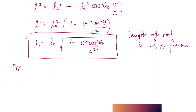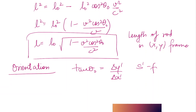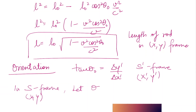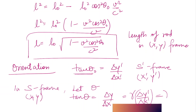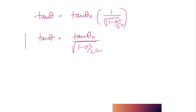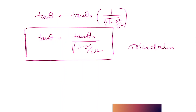Now we find the orientation. We know that tanθ₀ = Δy'/Δx' in the S' frame. In the S frame (xy), let the angle be θ. Then tanθ = Δy/Δx. Using the transformation equations, Δy = Δy' and Δx = Δx'/γ, so tanθ = γ·tanθ₀, which equals tanθ₀/√(1 − v²/c²). This is the orientation of the rod in the S frame.